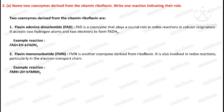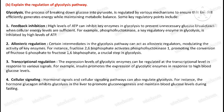Question number two, first part: Name two coenzymes derived from the vitamin riboflavin and write one reaction indicating their role. Second part of this question: Explain the regulation of the glycolysis pathway.